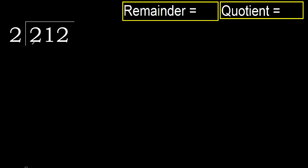212 divided by 2. 2 is not less, therefore with 2 — 2 multiplied by which number is nearest to 2 but not greater? 2 multiplied by 2 is 4, and 4 is greater. 2 multiplied by 1 is 2, which is not greater.